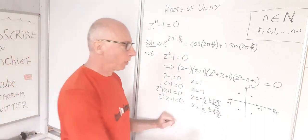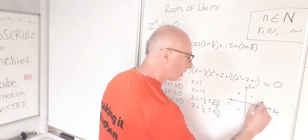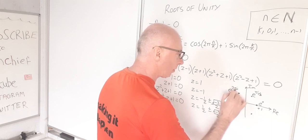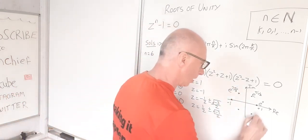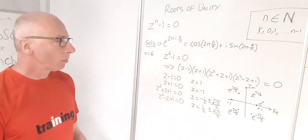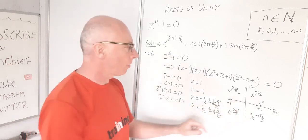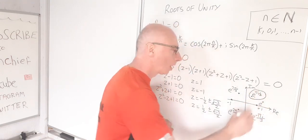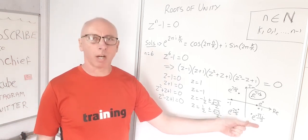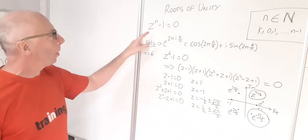Putting these in exponential form: +1 is e^0; e^(πi/3); e^(2πi/3); e^(−πi/3); and e^(−2πi/3). Our primitive roots are e^(πi/3) and e^(−πi/3) — the latter being e^(5πi/6) simplified. These are the primitive roots of unity for the polynomial z^n minus 1 when n equals 6.